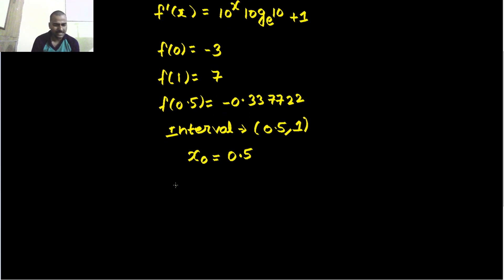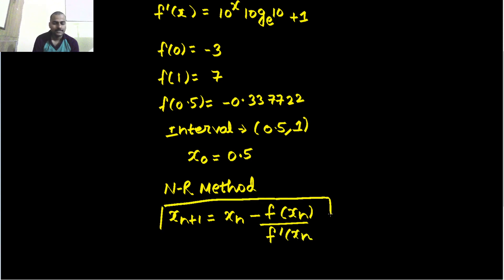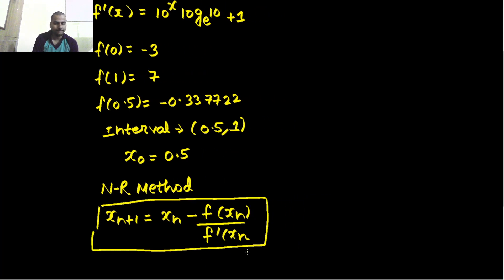Now let us start our iteration. What is the iterative formula for the Newton-Raphson method? For your Newton-Raphson method, your iterative formula is x_{n+1} = x_n - f(x_n)/f'(x_n). This is your iterative formula for Newton-Raphson method. Let us jump into the iterations.